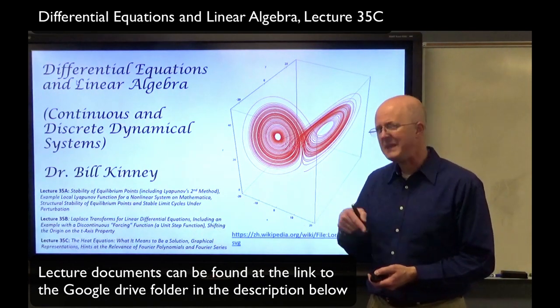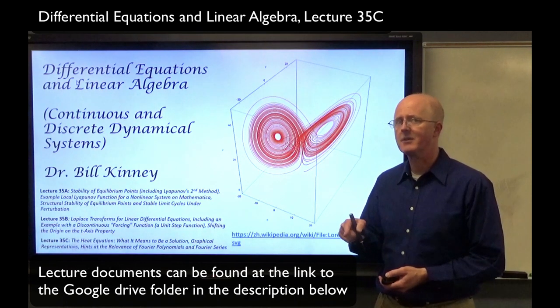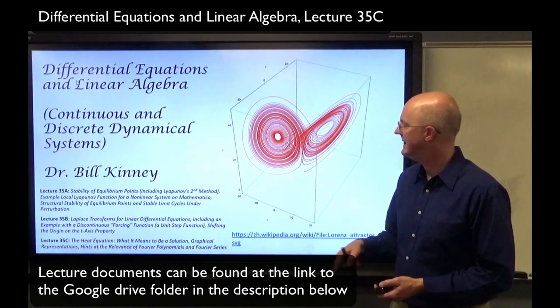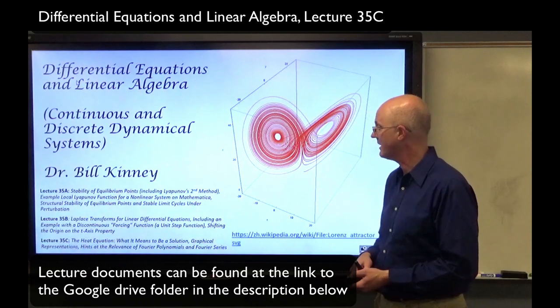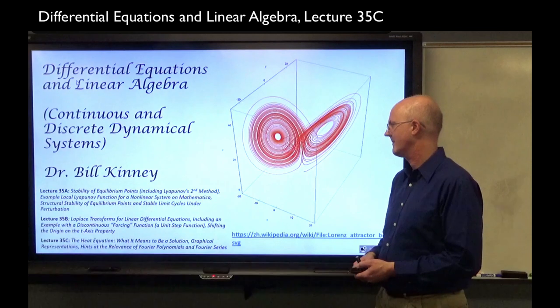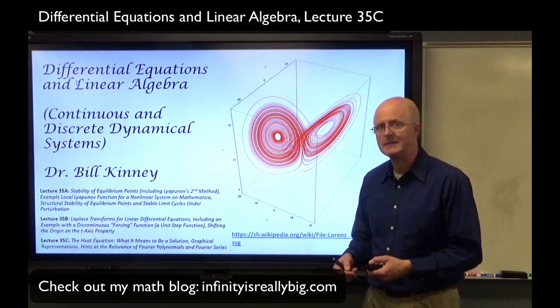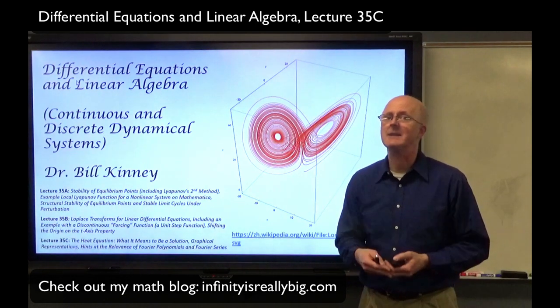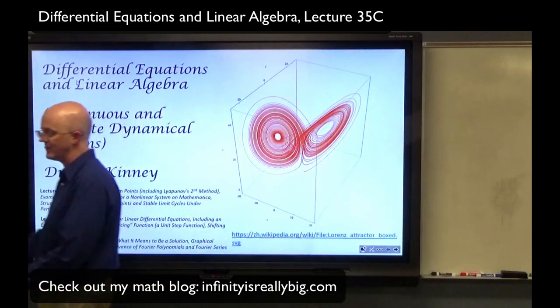In lecture 34b, there was no part c. We talked about Fourier polynomials and hinted at Fourier series and partial differential equations. In 35c, we're going to talk about a particular partial differential equation called the heat equation and ask what it means to be a solution. We'll look at some graphs and hint at the relevance of Fourier polynomials and Fourier series. In lecture 36c, we will then combine PDEs and Fourier series.